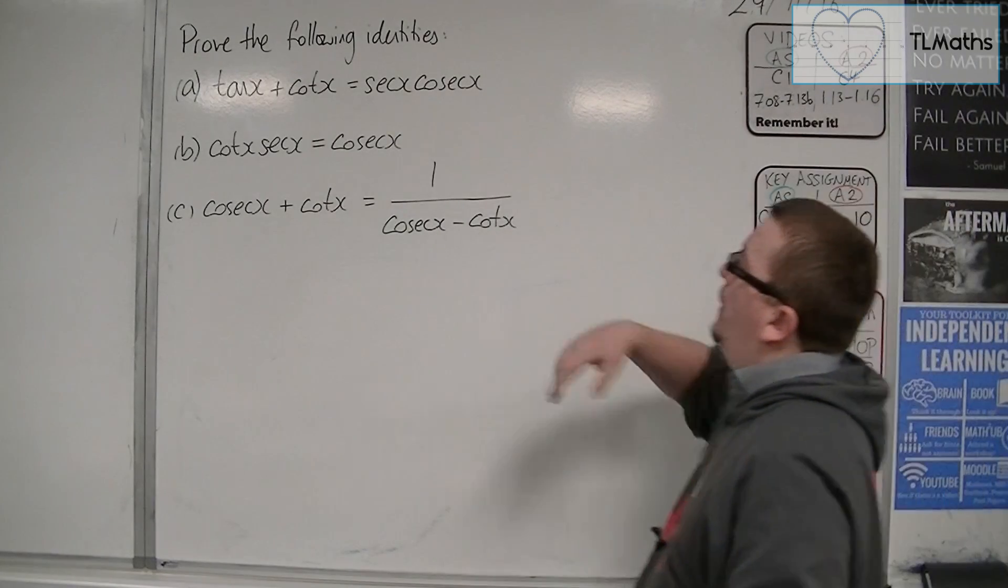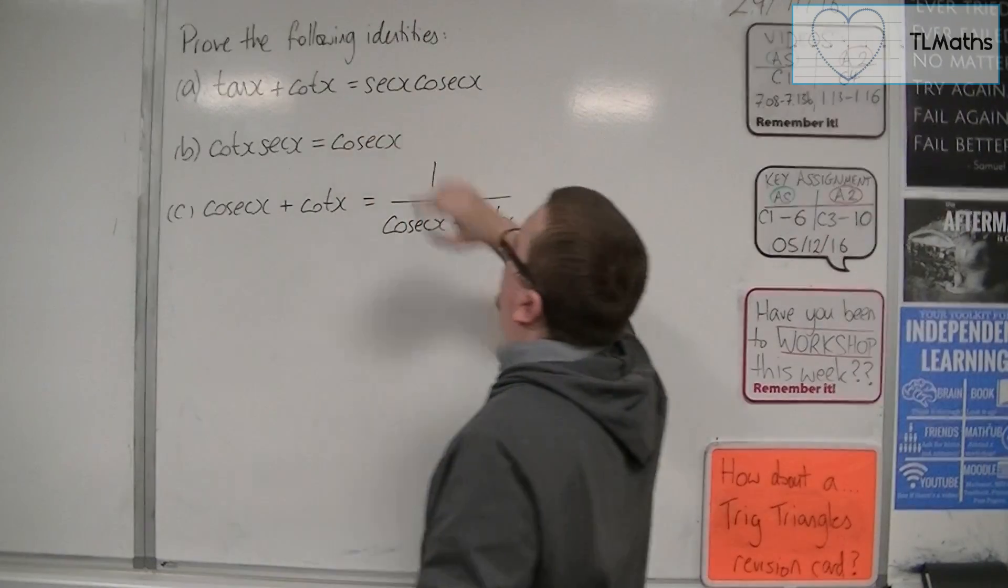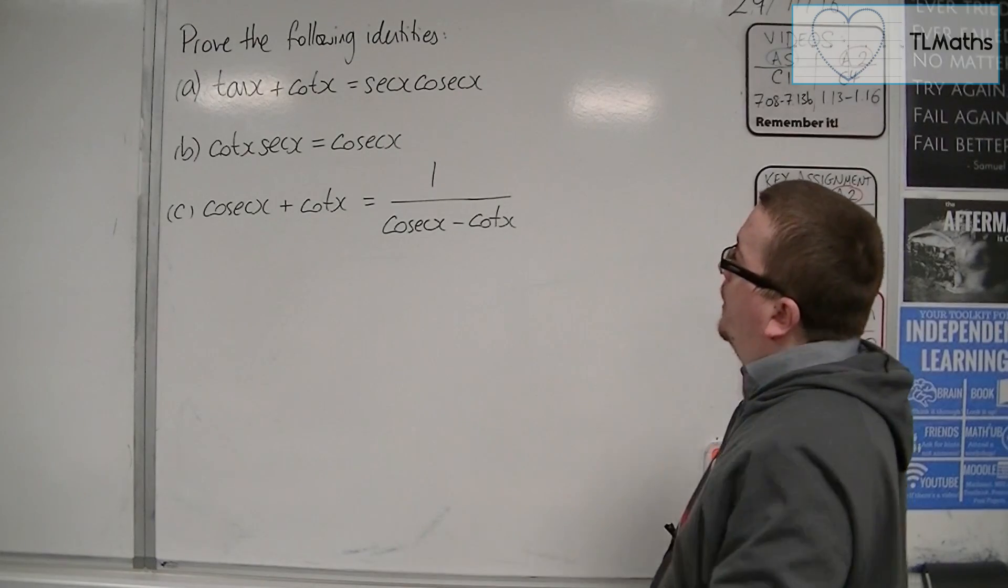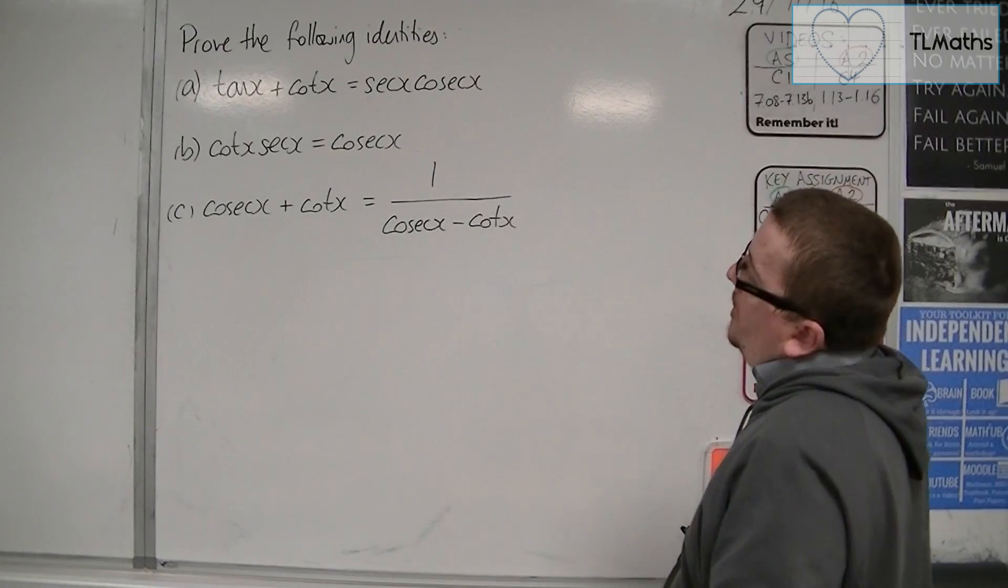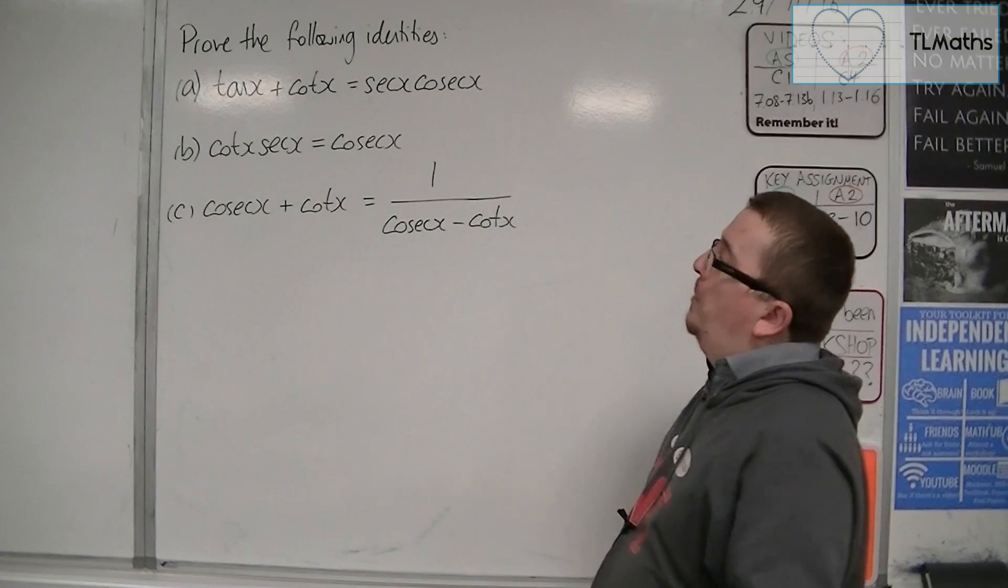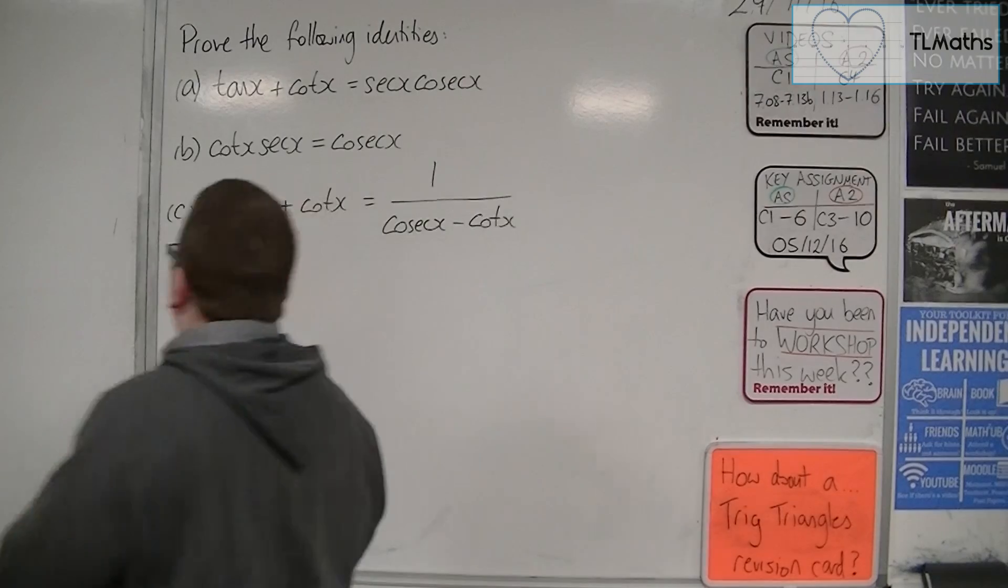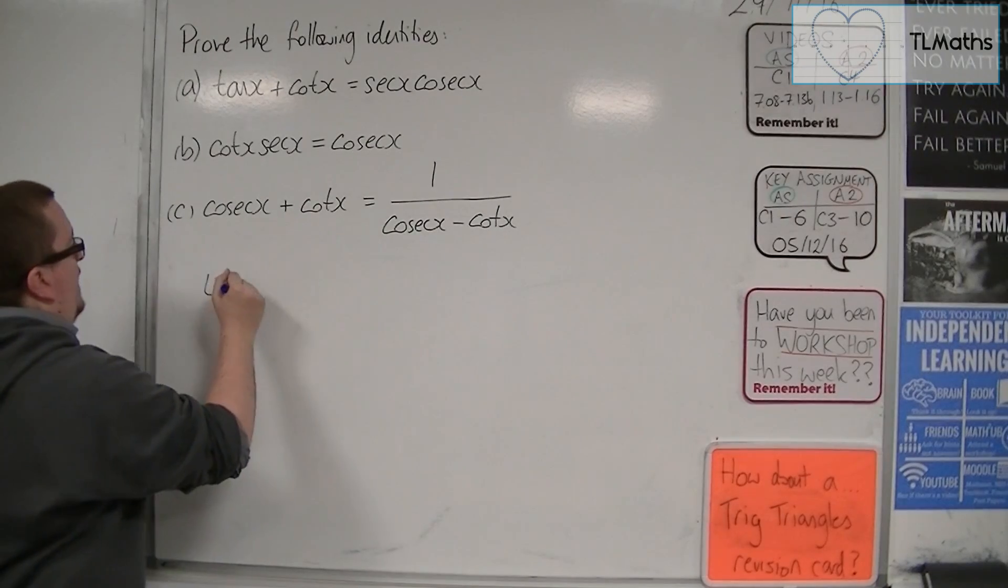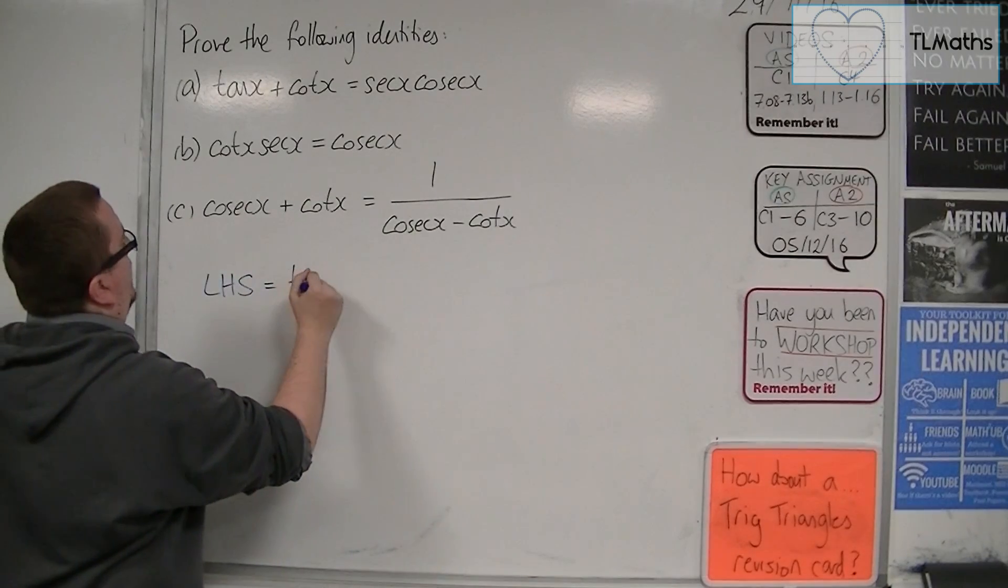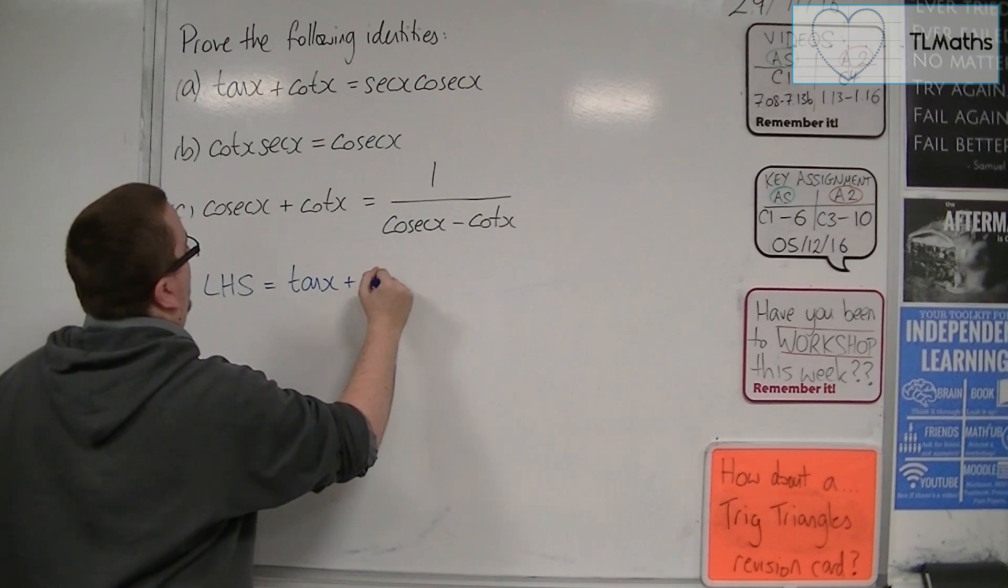So let's have a look at this first one. Tan x plus cot x is equal to sec x cosec x. I think the most complicated looking side is actually this one with the plus in it. So I'm going to start with the left-hand side for this one. So the left-hand side is equal to tan x plus cot x.